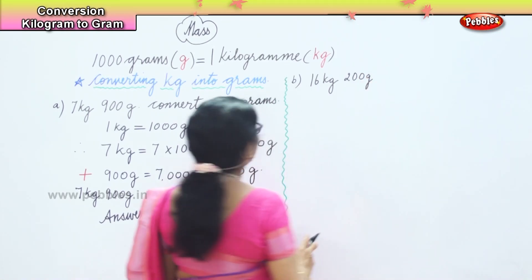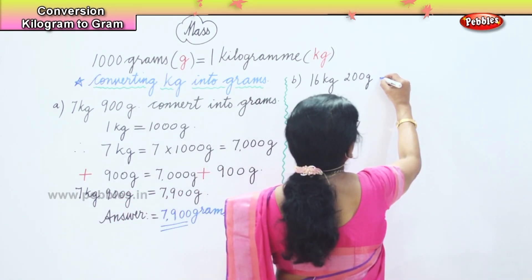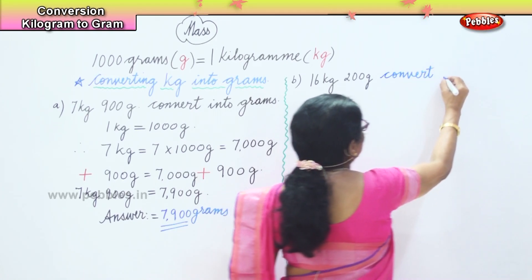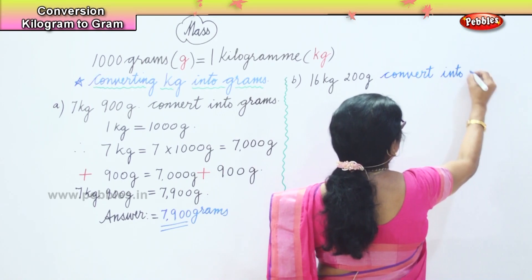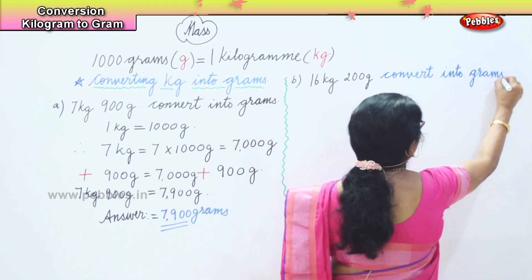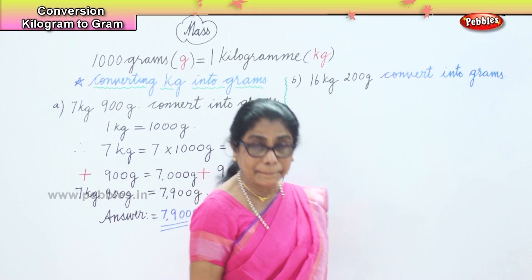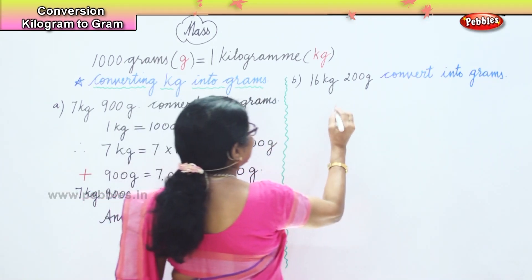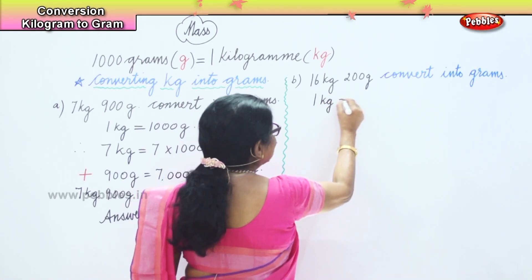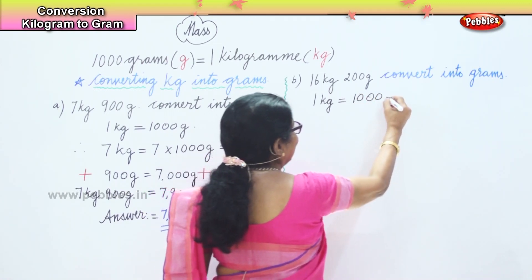So we have 16 kilograms and 200 grams, and we are going to convert this into grams. The first thing we need to remember is: 1 kg is equal to 1000 grams — that's the first step we write down.